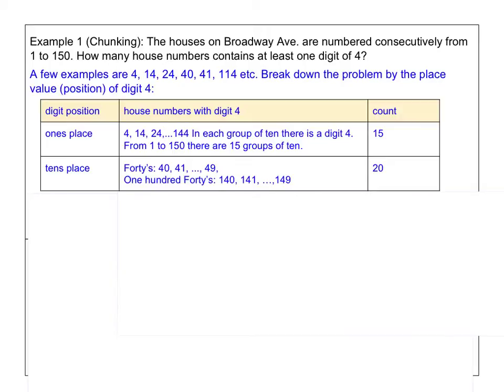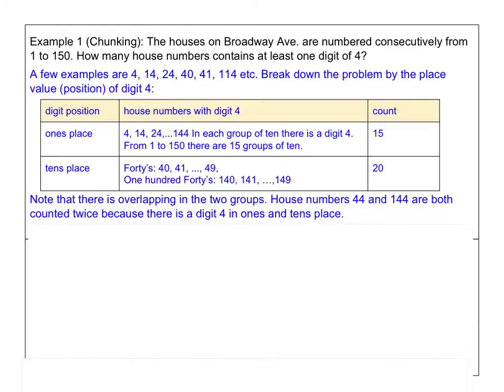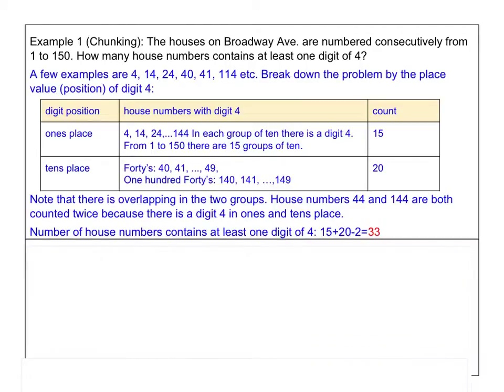Now, be careful now because we are going to count how many. Don't jump into the conclusion right away. So we have 15 and 20, the answer must be 35. Not so fast because we are going to see some repetition. Note that there is overlapping in the two groups because house number 44, which will be in the ones place group, and 144. These two numbers are counted twice because there is a 4 in the tens place and in the ones place. So if we just add up these two numbers, then we will be overcounting. So just take out these two numbers. So the number of house numbers containing at least one digit of 4 is 15 plus 20 and subtract the two repeated ones. So the answer is 33.